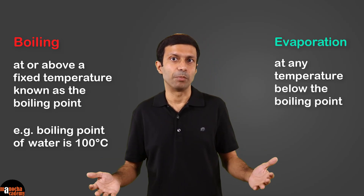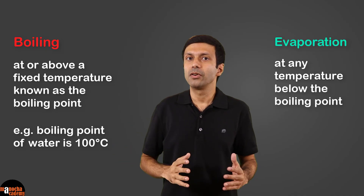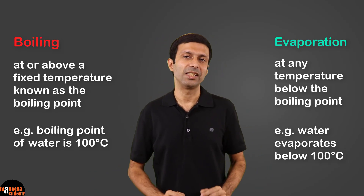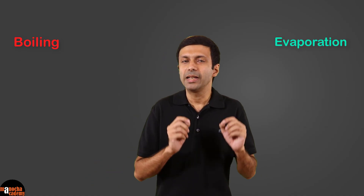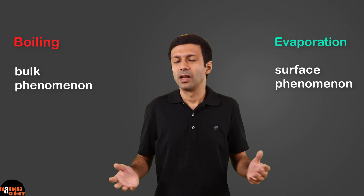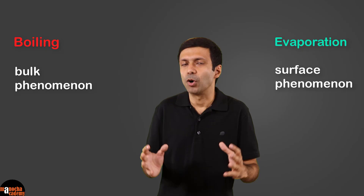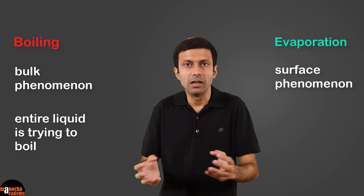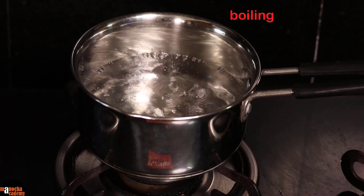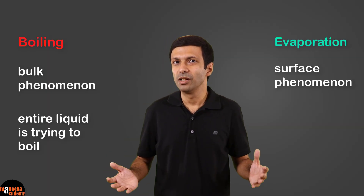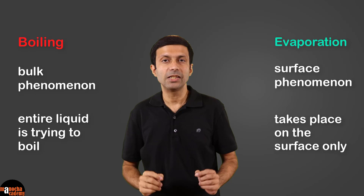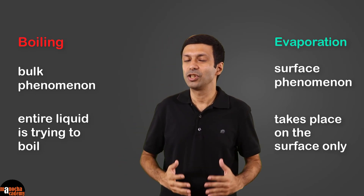But evaporation can take place at any temperature below the boiling point. So water in the lakes, rivers, puddles and our clothes can evaporate at any temperature below 100 degrees centigrade. The next important difference is boiling is a bulk phenomena and evaporation is a surface phenomena. Bulk phenomena means the entire liquid is trying to boil — as you can see, the entire water is trying to boil at the same time. But in evaporation, only the water molecules on the surface of the liquid are changing to vapor state. Hence evaporation is a surface phenomena.